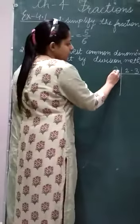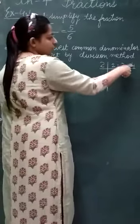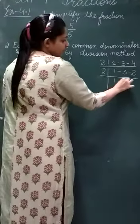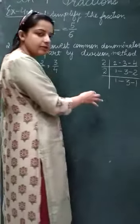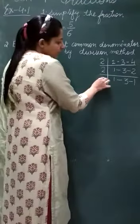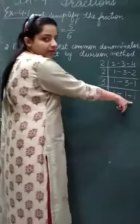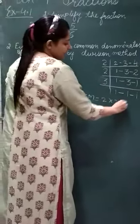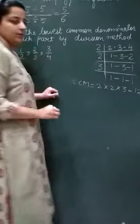You have to find the LCM by the division method, so you will start with the smallest prime number, 2. 2 divides 2 once; 3 will remain as it is; and 4 divided by 2 gives 2. Again take 2: 1 stays, 3 stays, 2 divided by 2 gives 1. Now take 3: 3 divided by 3 gives 1. We have got 1, so the LCM is 2 × 2 × 3 = 12. The lowest common denominator is 12.